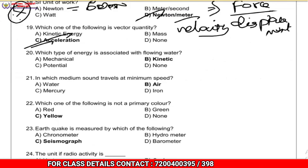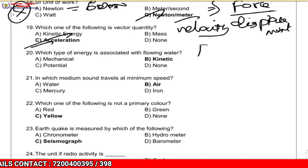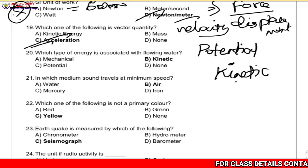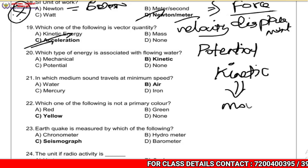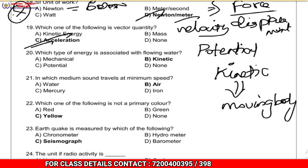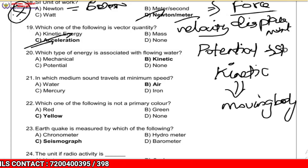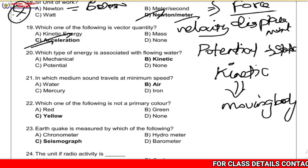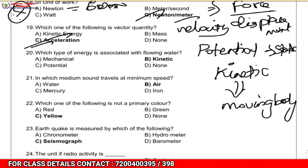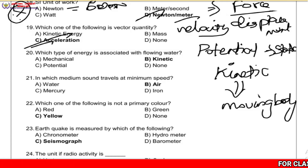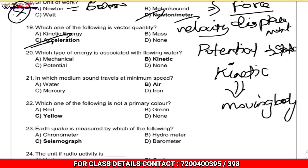Which type of energy is associated with flowing water? Kinetic energy is associated with a moving body. Potential energy is static. Flowing water has kinetic energy.